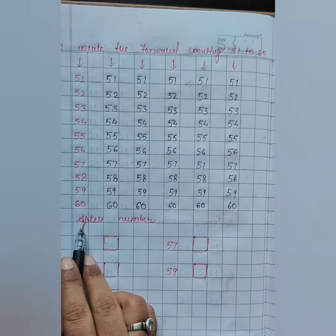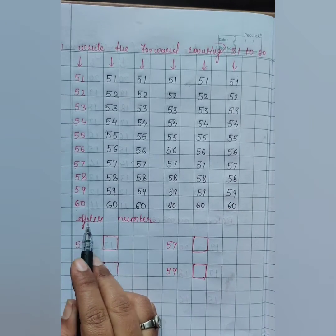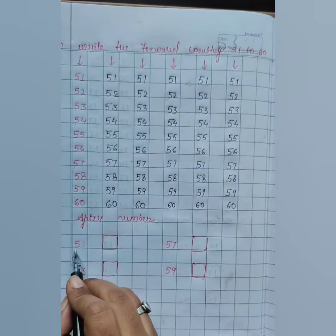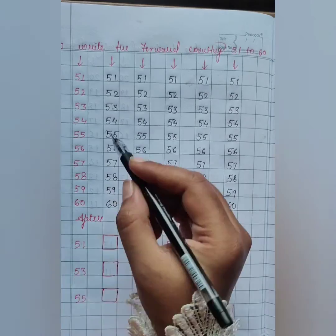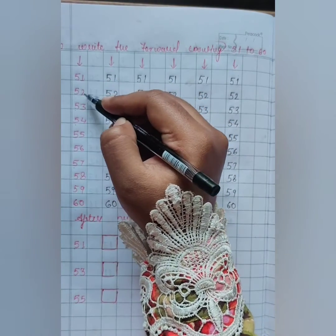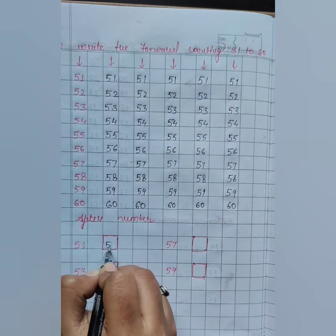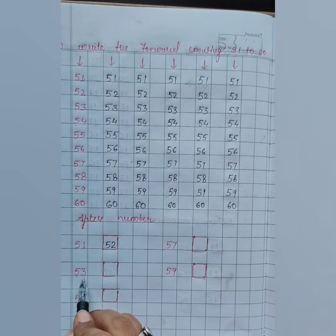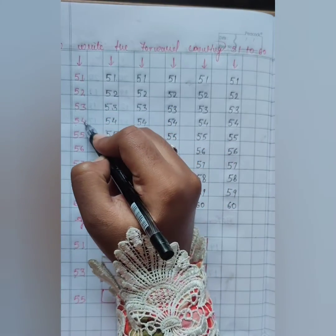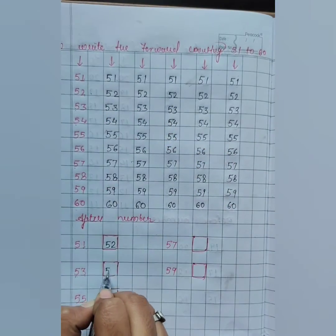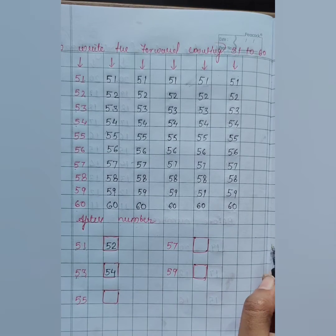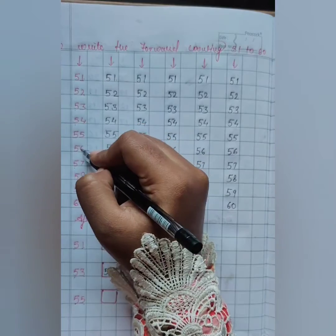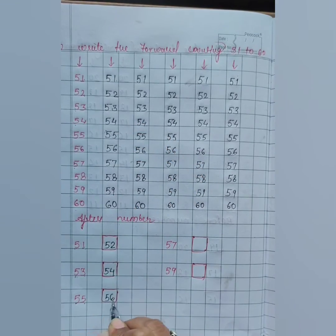Here is one exercise. This is the after number. After means 'baad mein'. Okay? What is this? 5, 1 — 51. 51, after: 52. 5, 2 — 52. And this is 5, 3 — 53. 53, after: 5, 4 — 54. Our next number is 5, 5 — 55. 55, after: 5, 6 — 56.